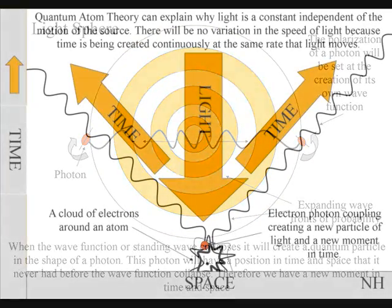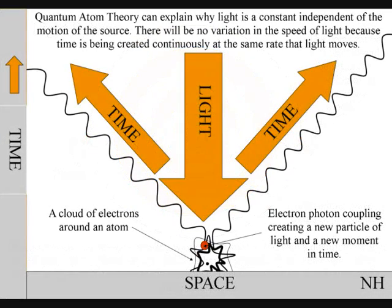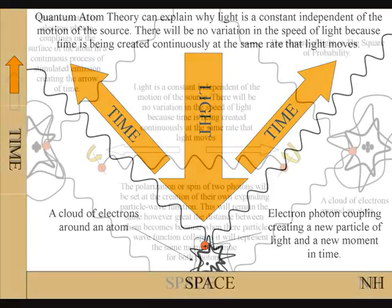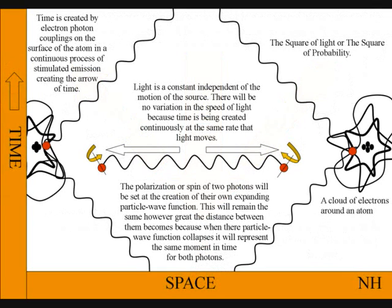In this theory, light is a universal constant, independent of the motion of the source, because time is being created continuously, at the same rate that light moves.